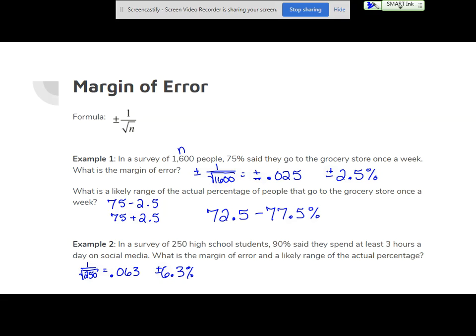So 90 minus 6.3, 83.7% to 96.3% is a likely range of the actual percentage of students, of high school students that spend at least three hours per day on social media.